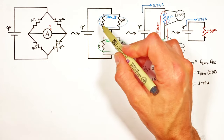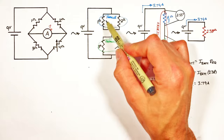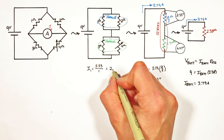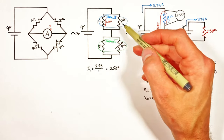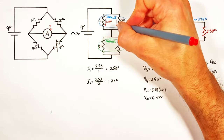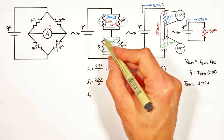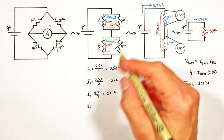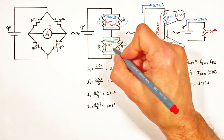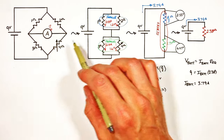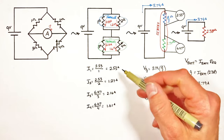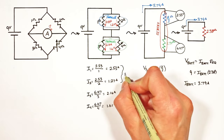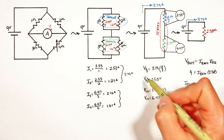Knowing the voltages across each of these components, we now know the voltages across the parallel resistor pairs, which allows us to solve for the current through each of the four resistors. The 1 ohm resistor has 2.53 volts across it, and those same 2.53 volts are across the 2 ohm resistor. Down below, there's 6.47 volts across the 3 ohm and 4 ohm resistors. The current through resistors 1 and 2 adds up to the battery current, and the current through resistors 3 and 4 also adds up to the battery current.